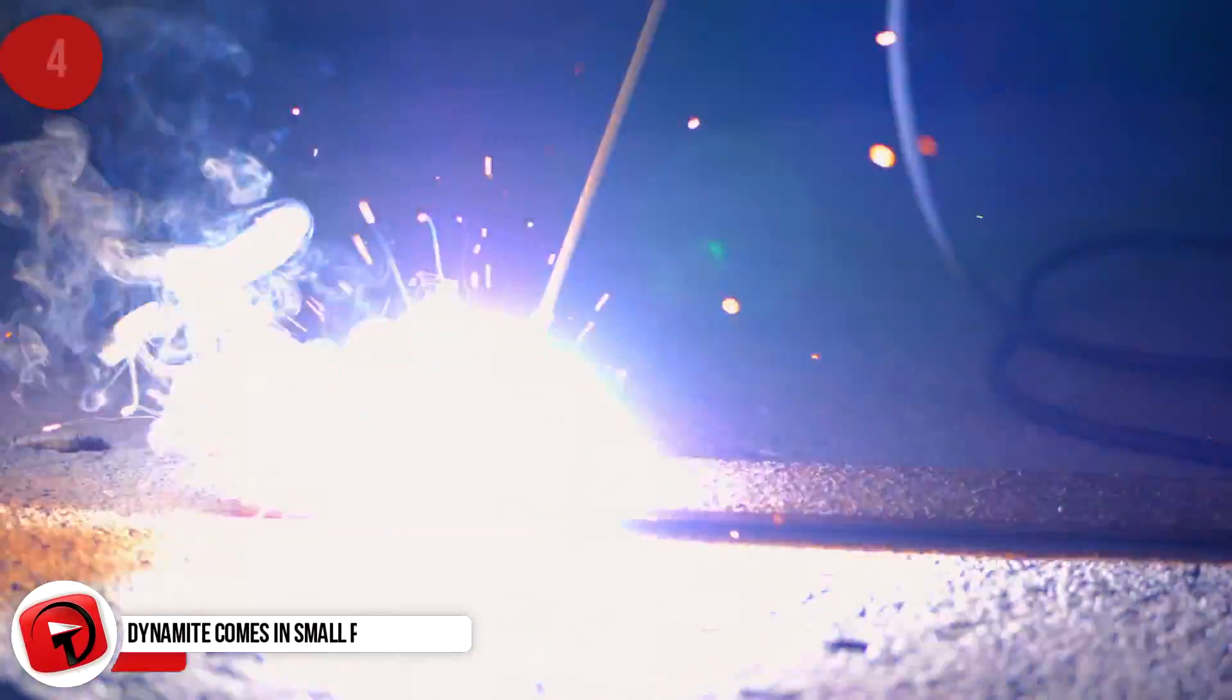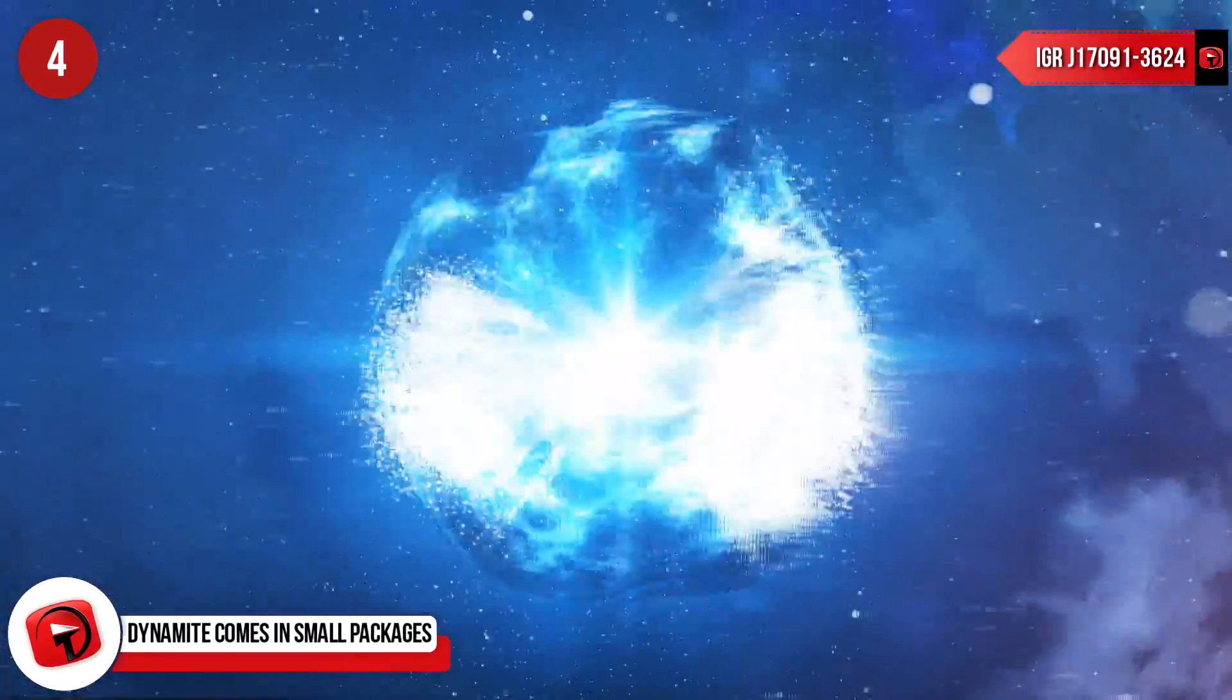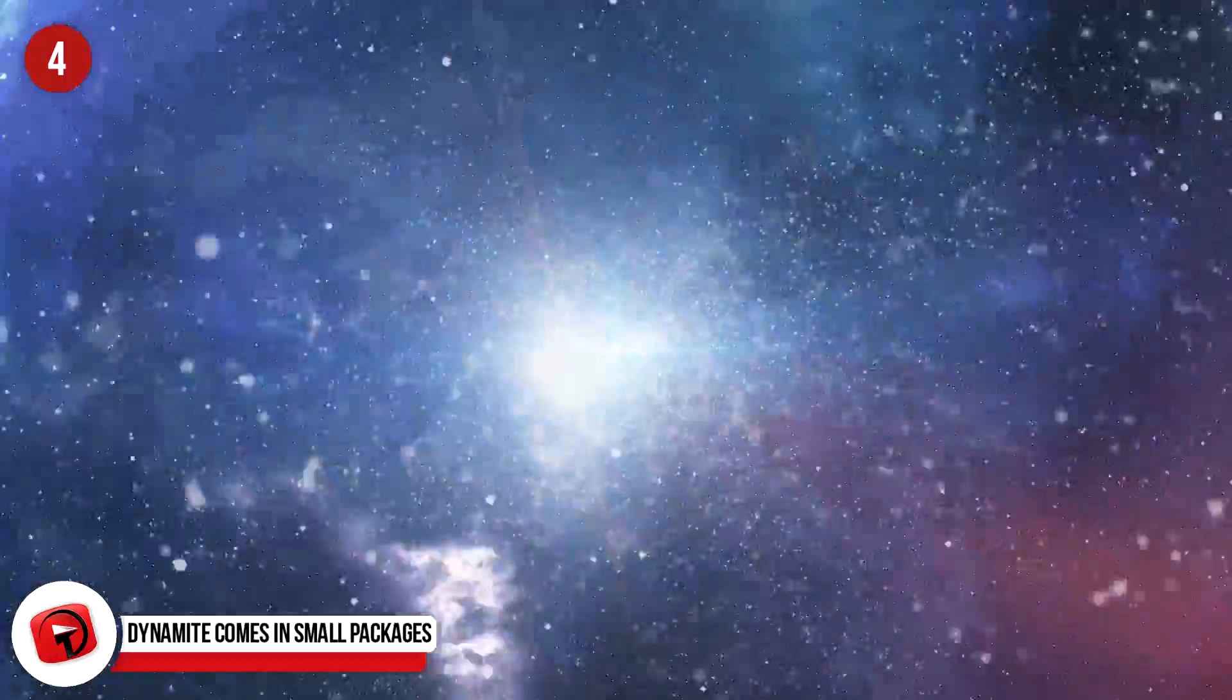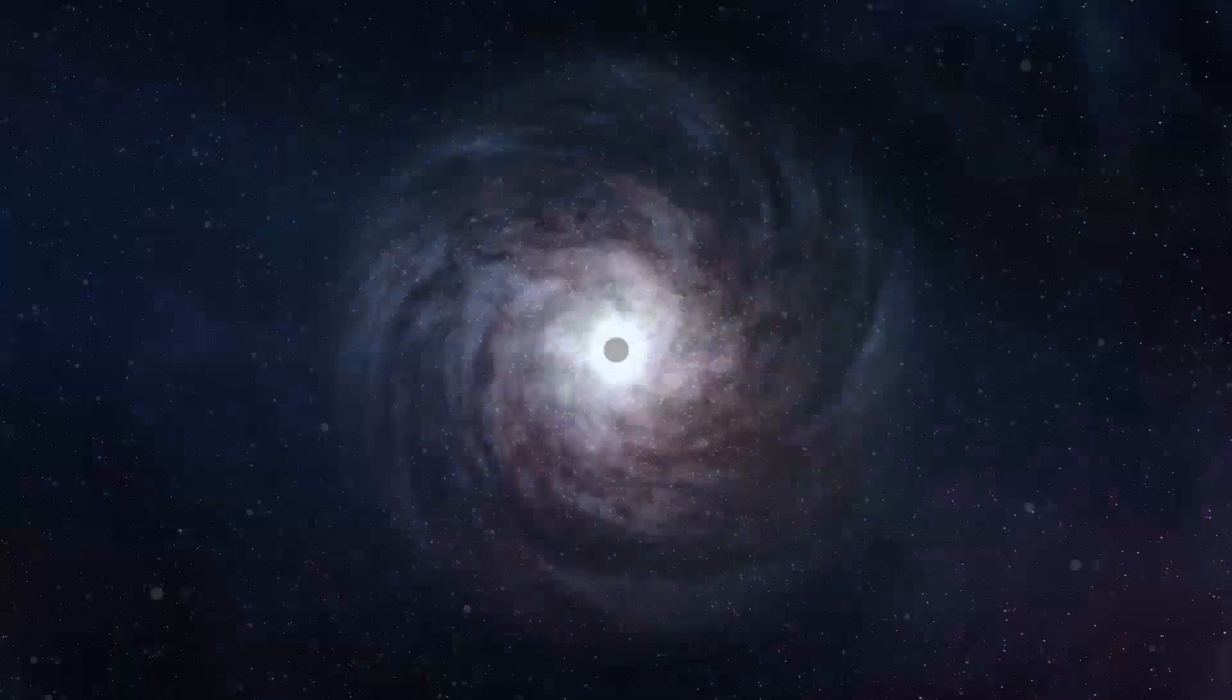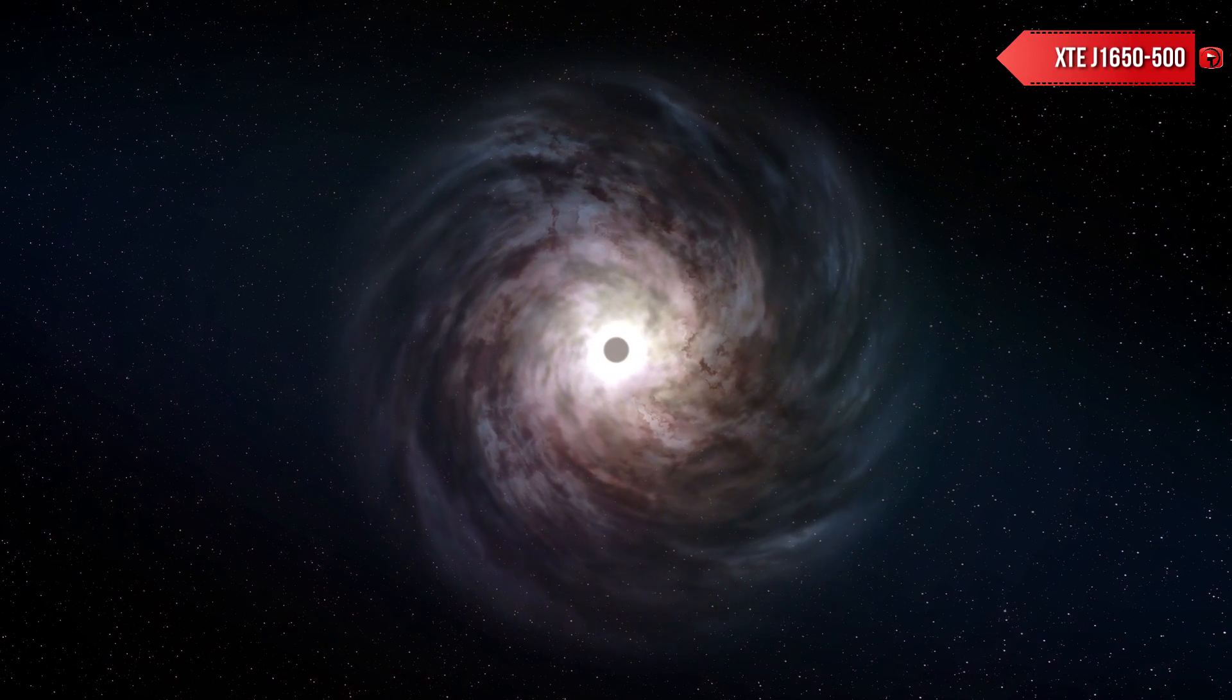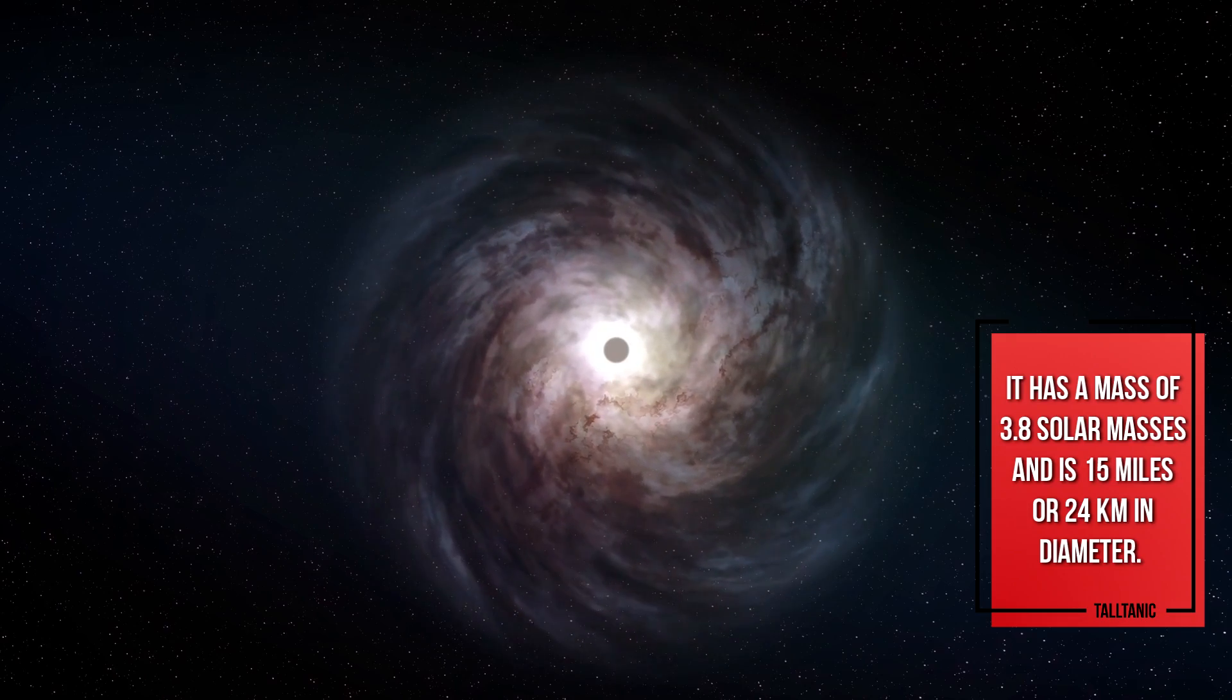Dynamite comes in small packages. One of the smallest black holes is the IGR J170913624, and this tiny hole can rip winds out at 20 million miles per hour, ten times stronger than the biggest of black holes. This black hole is found in our Milky Way. But the absolute smallest black hole that we know of is the XTE J1650500. It has a mass of 3.8 solar masses and is 15 miles in diameter.